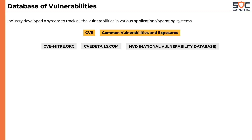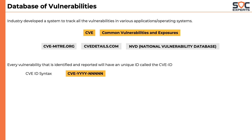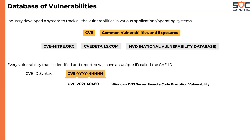According to the system developed by the industry, every vulnerability that is identified and reported will have a unique ID called the CVE-ID. The syntax is as follows: the name CVE, followed by a dash and four digits representing the year the vulnerability was identified, and again a dash followed by a four or five digit number. Here is an example: CVE-2021-40469, which represents a remote code execution vulnerability in the Windows DNS server.